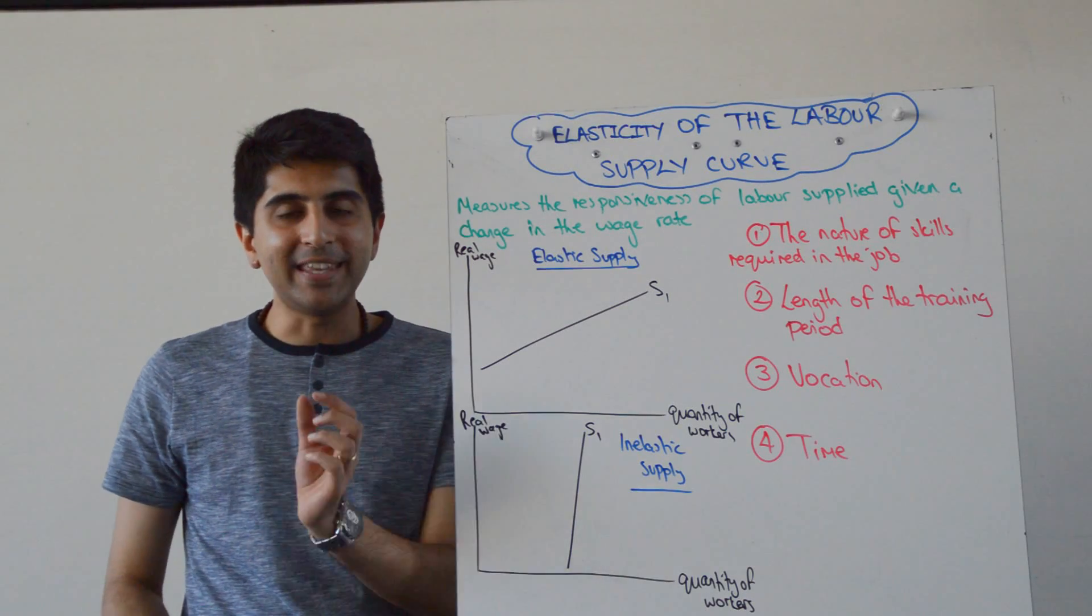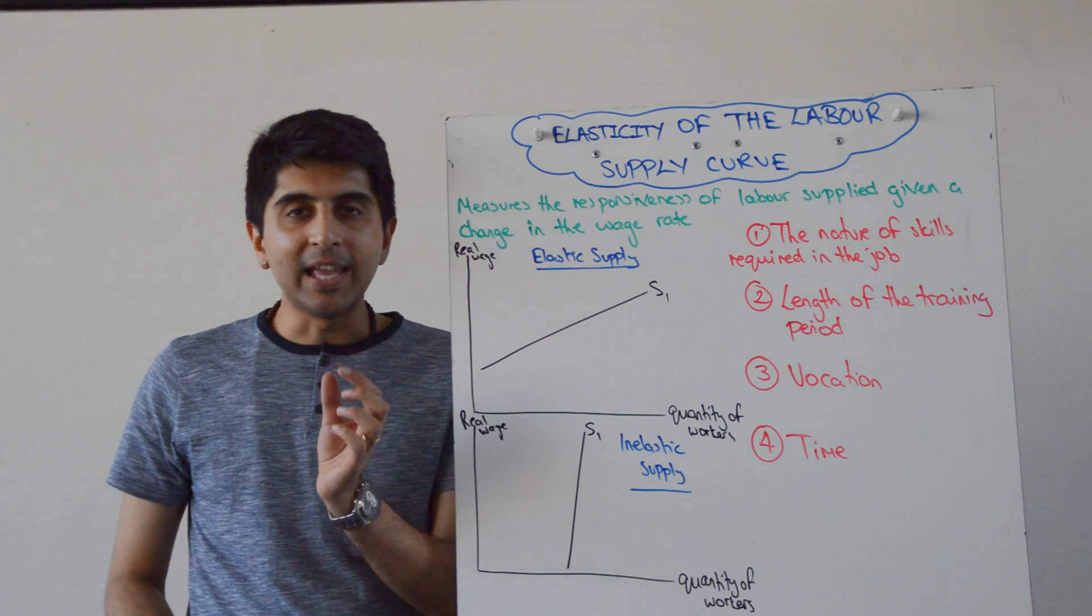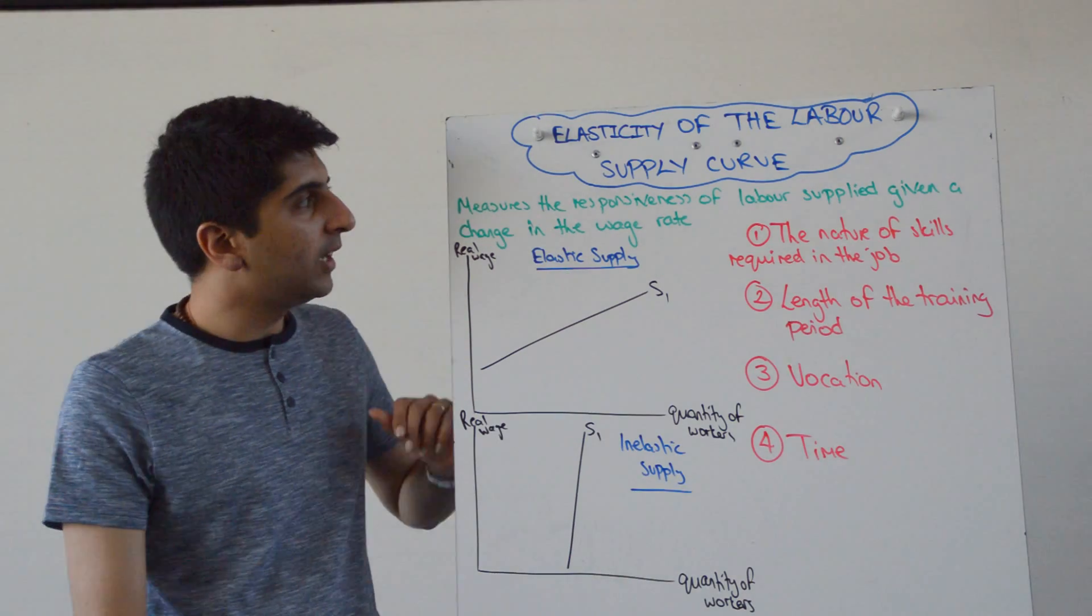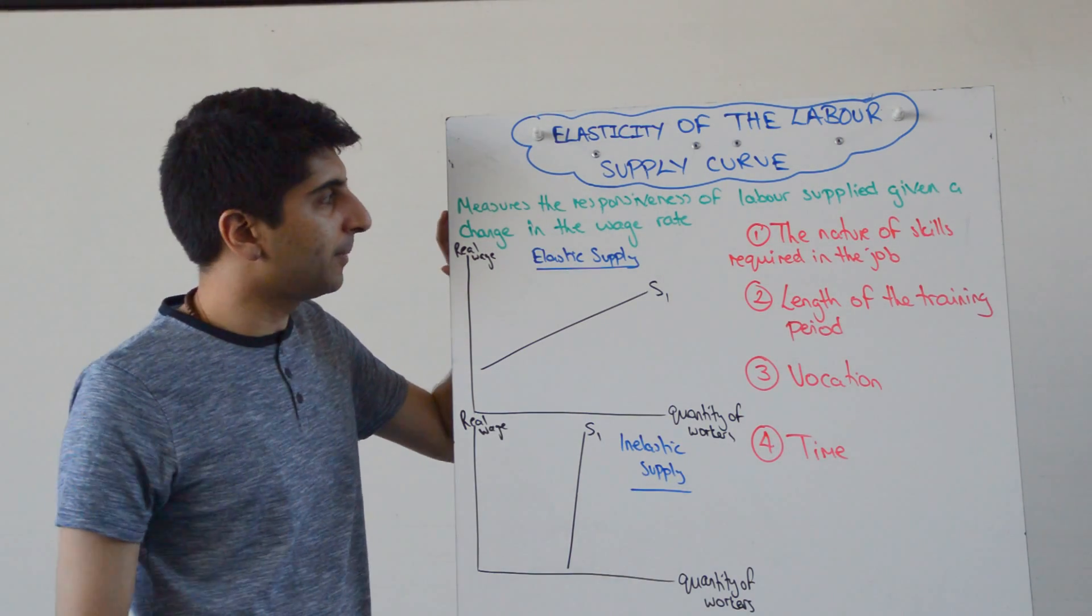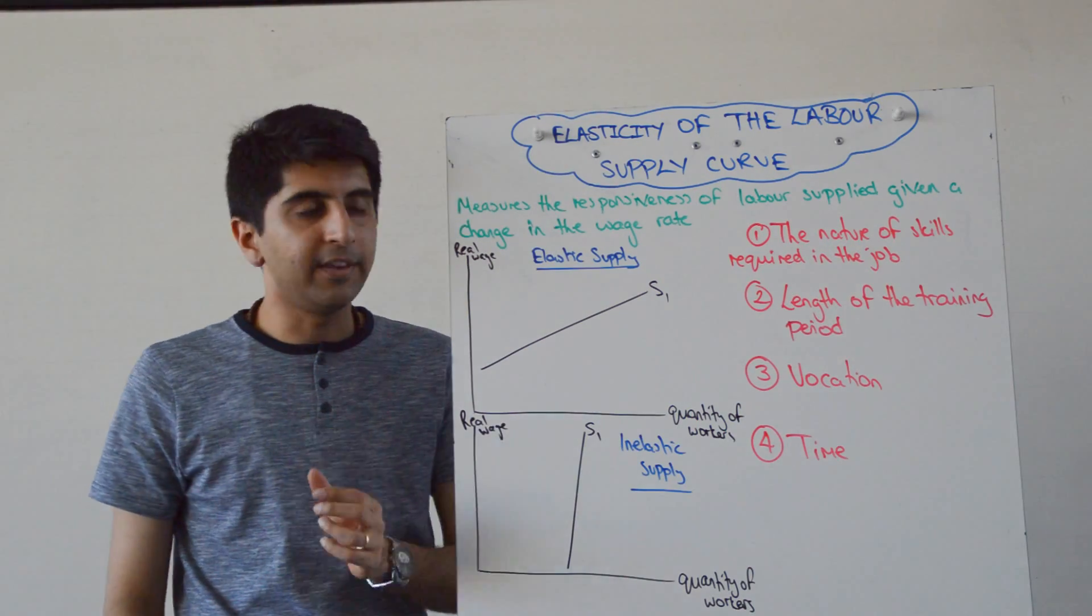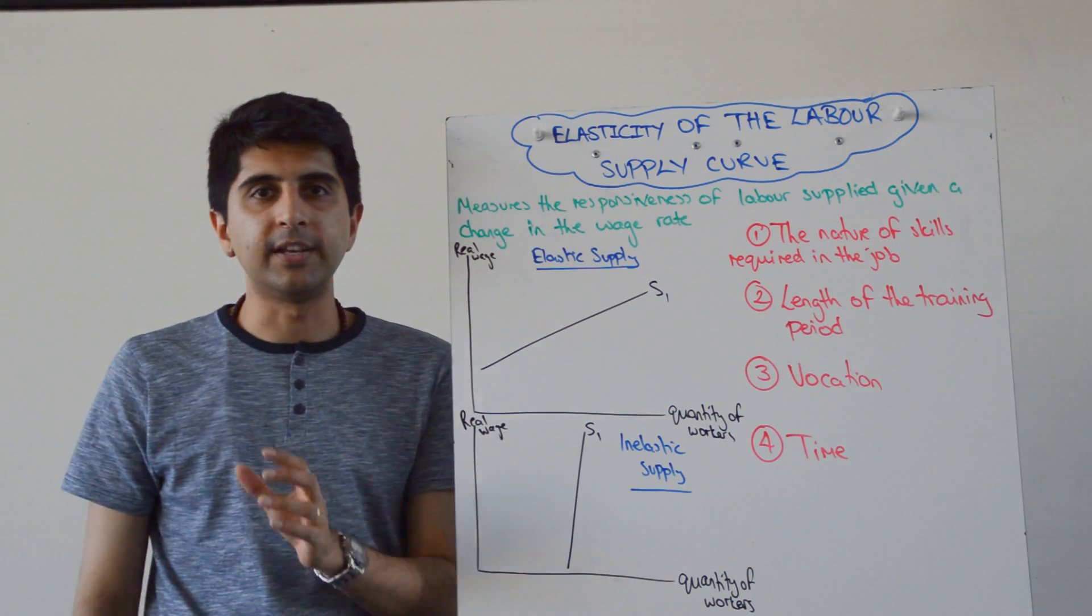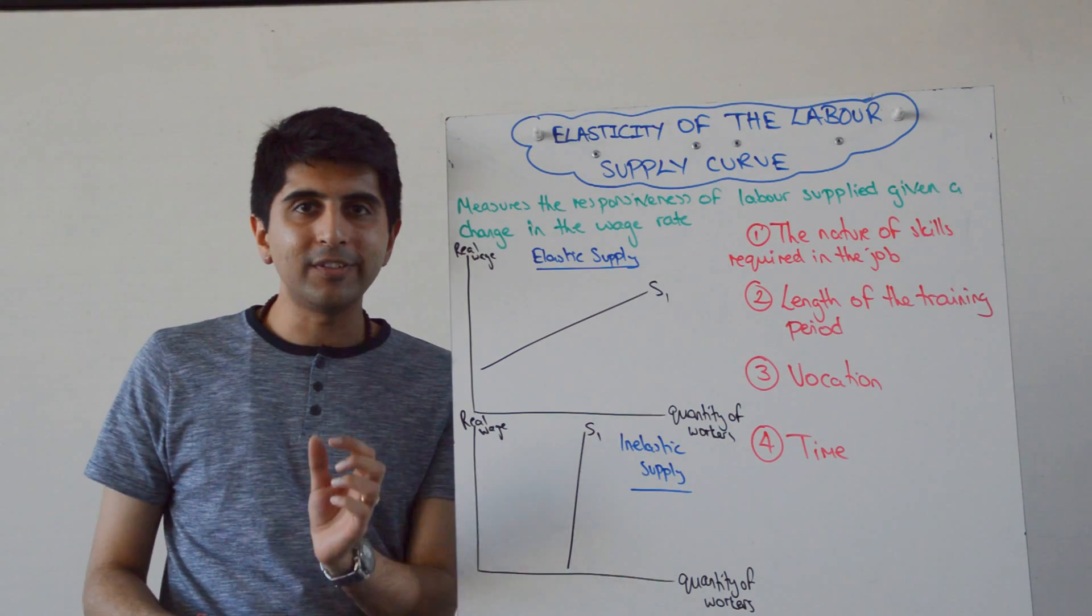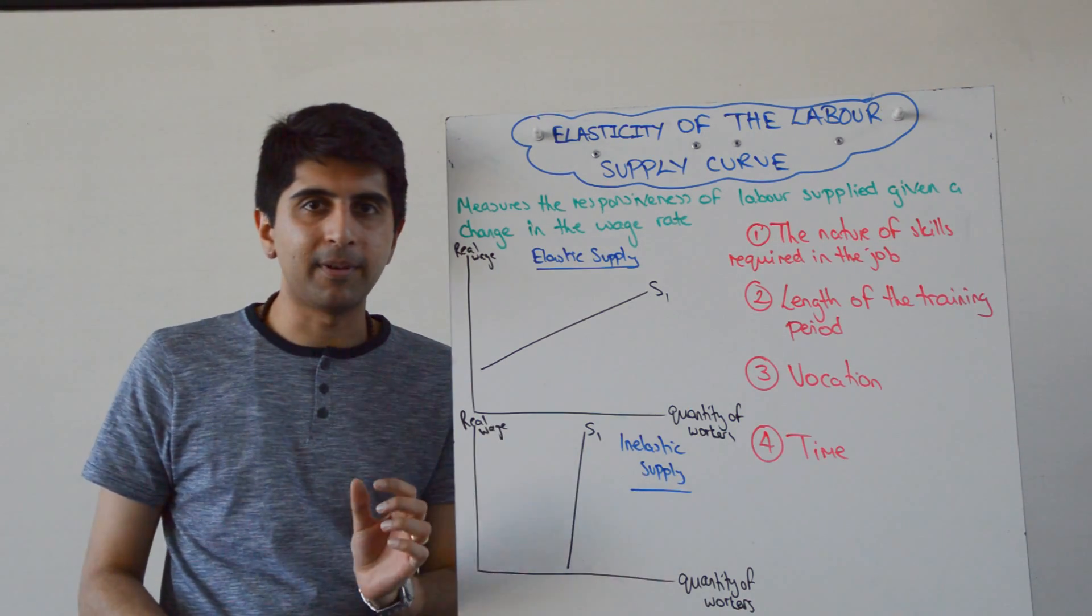Hi everybody, let's now look at the elasticity of the industry labor supply curve. We'll start with a little definition. The elasticity of the labor supply curve measures the responsiveness of labor supply given a change in the wage rate. Simple as that. So when the wage rate increases or decreases, what is the effect on labor supply? That's what we're looking at here.